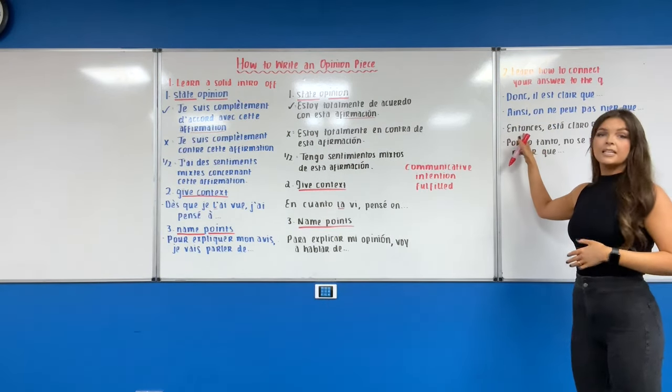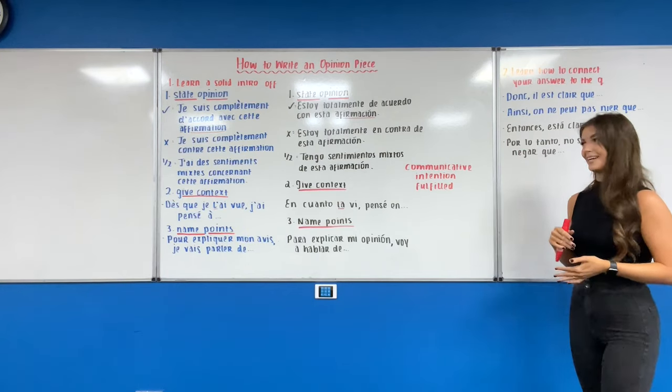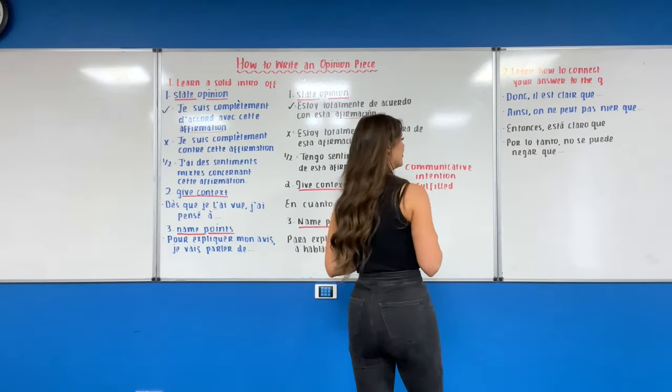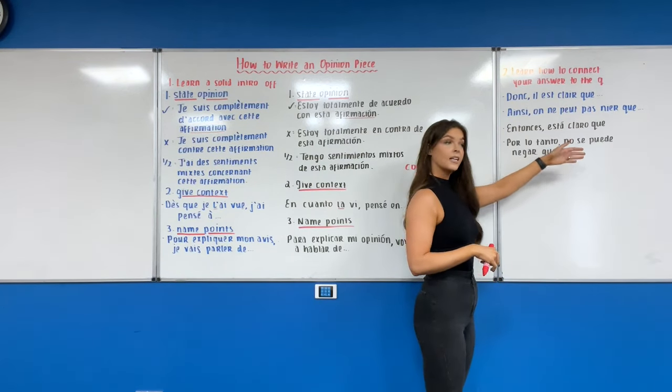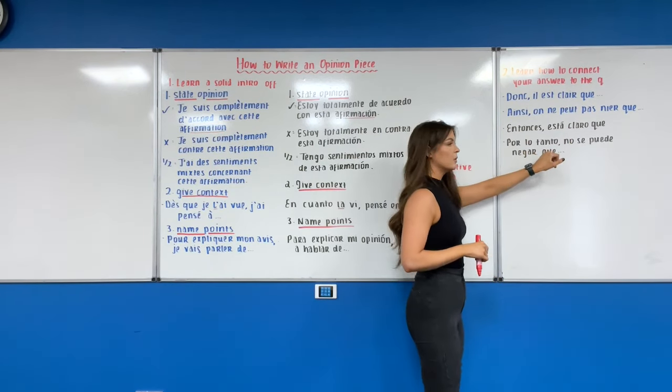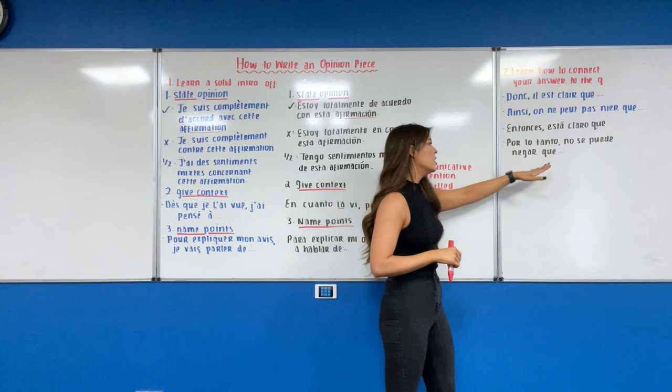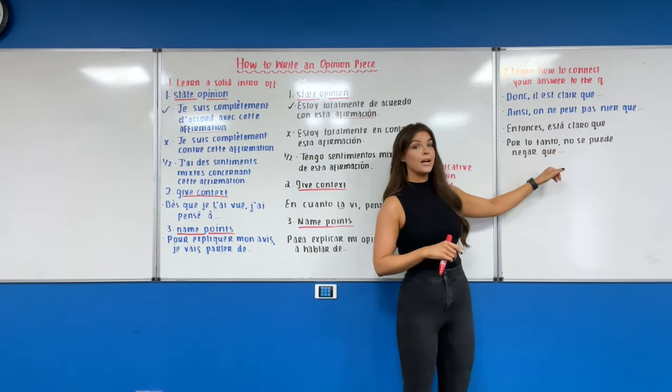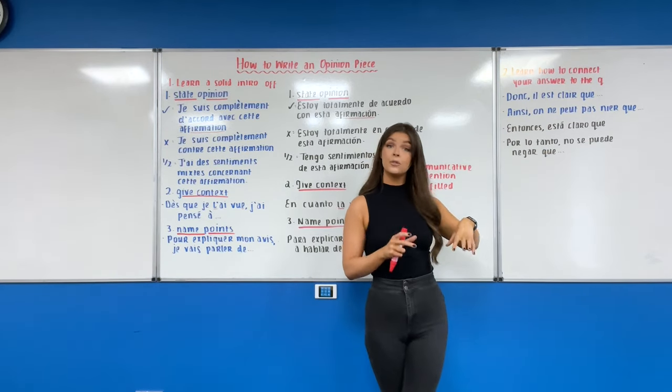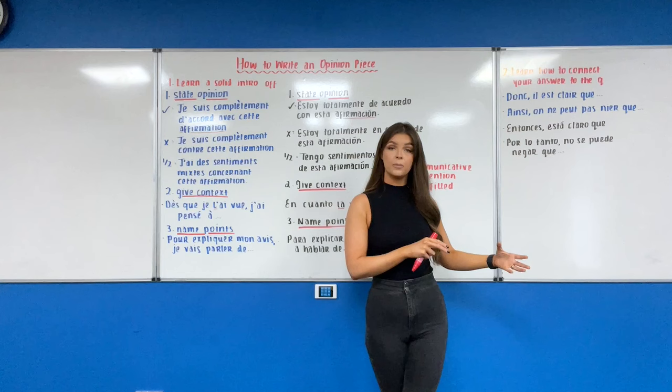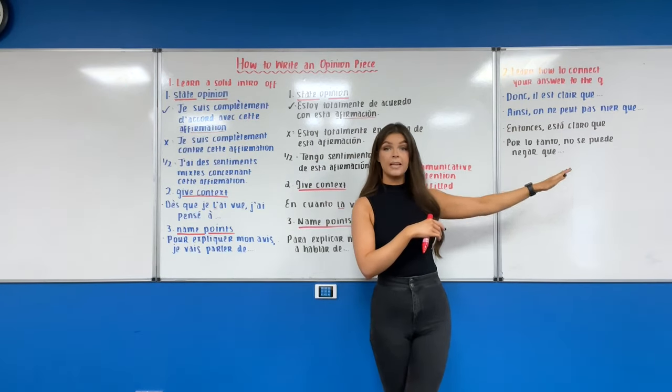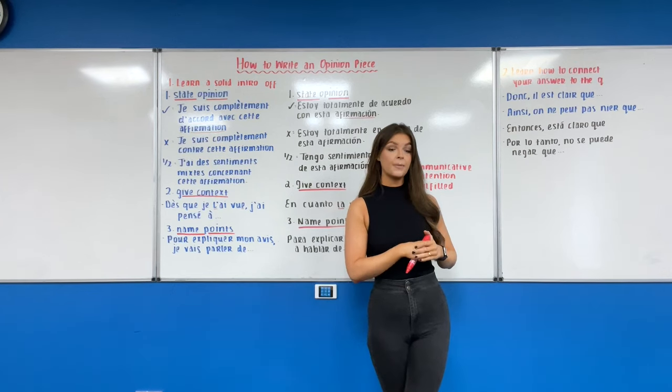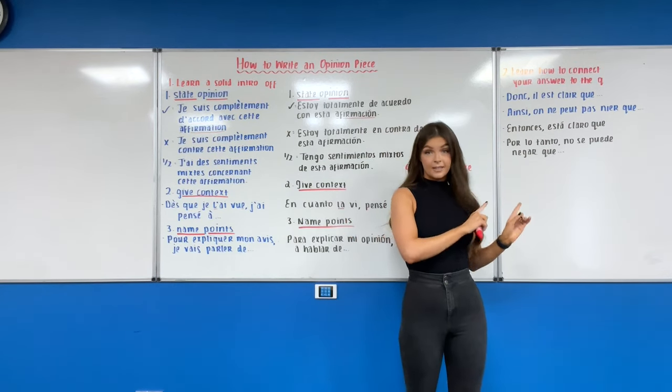Entonces, I always feel so fancy when I say that because I never say it in English, right? So entonces, it's like thus or so. Está claro que, it is clear that. Or por lo tanto, therefore. No se puede negar que, you cannot deny that. So you could use those as your last sentence in each of your points that you're going to make and figure out a way to connect the title back into the end of each of those sentences as well.